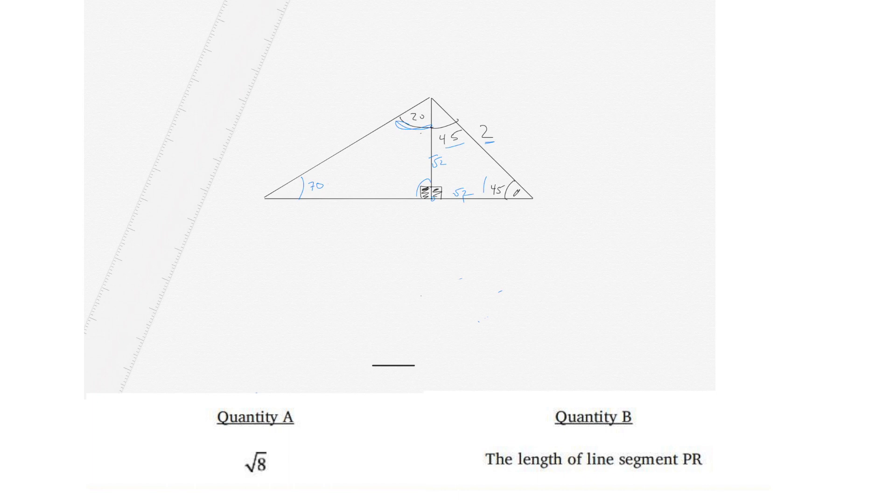The next thing is that 70 degrees opposes a side that's square root of 2. So therefore, this 20 degrees has to oppose a side that's less than the square root of 2. So this side here, because 20 is obviously less than 70, so that angle opposes a smaller side. So from here to here is less than the square root of 2, and from here to here is square root of 2. So PR is square root of 2, which is this side here, plus something less than the square root of 2.